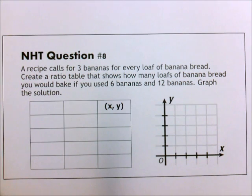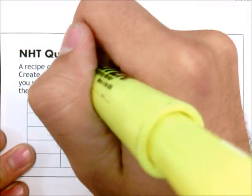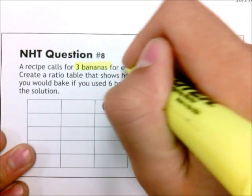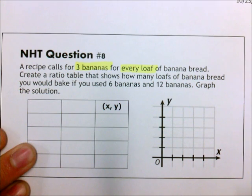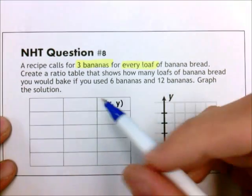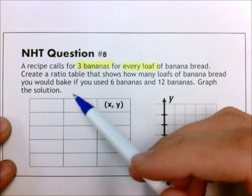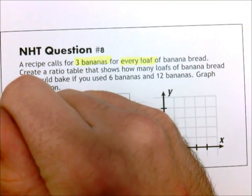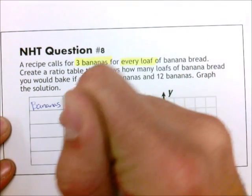I need to break this question apart a little bit first. A recipe calls for 3 bananas for every loaf - I'm going to highlight that. That's important because one of the things I need to figure out first is what are the two things I'm comparing. I'm comparing bananas and loaves of bread. So I have two blank areas. I'm going to put one as bananas and one as loaves of bread.